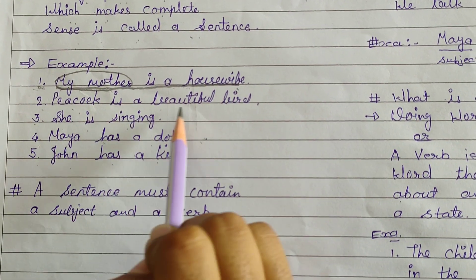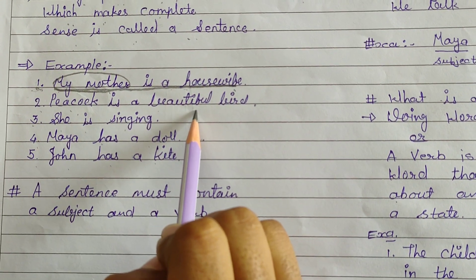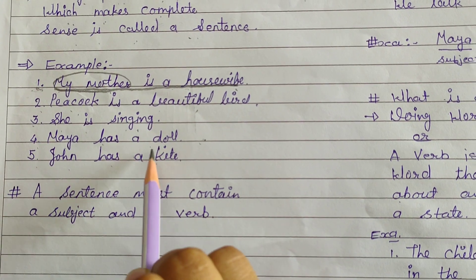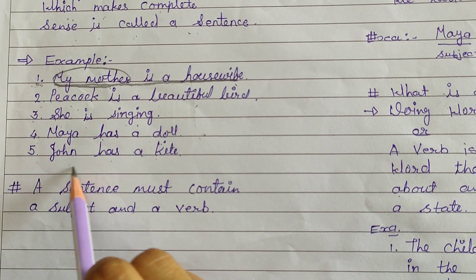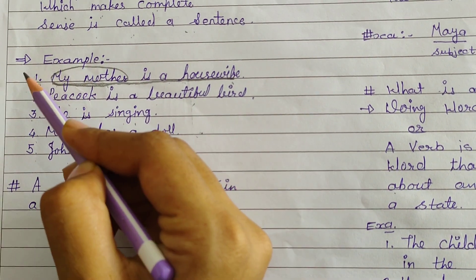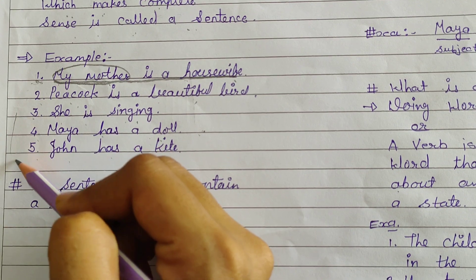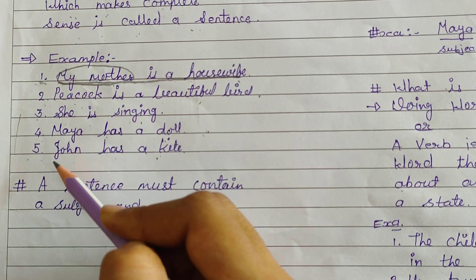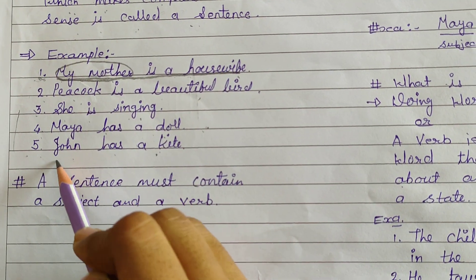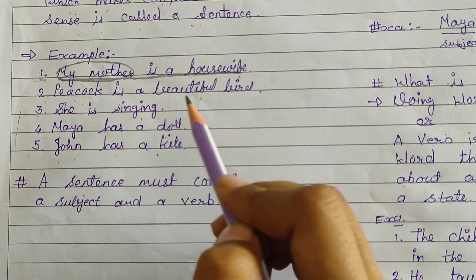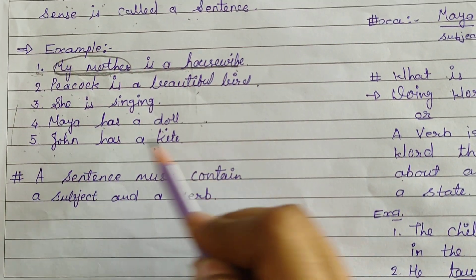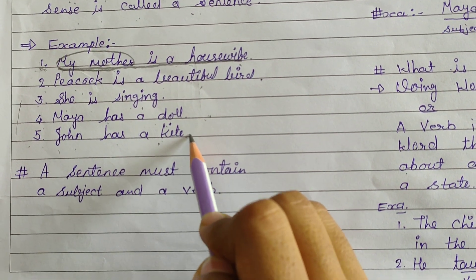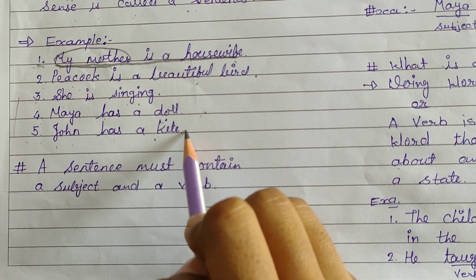Second is: Peacock is a beautiful bird. She is singing. Maya has a doll. John has a kite. So these are examples of sentences because these are groups of words which form a meaningful, complete sentence.